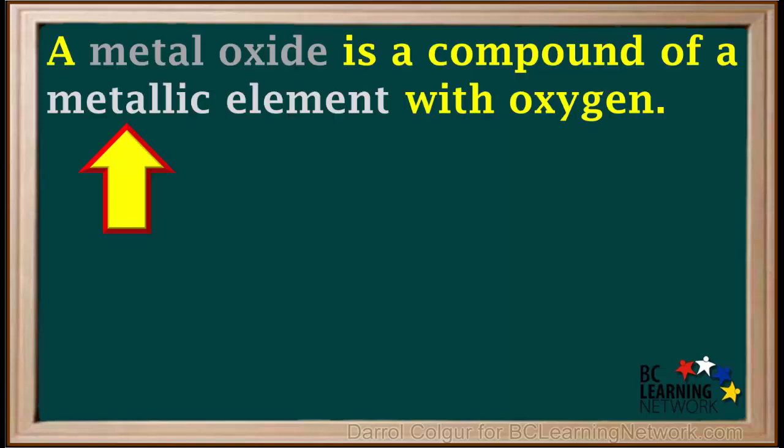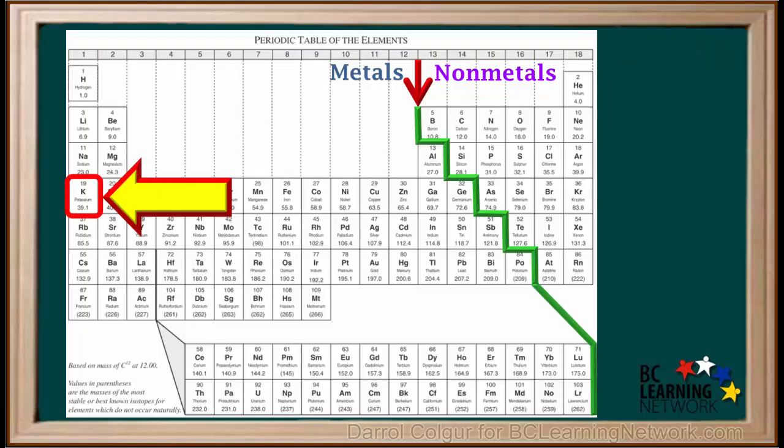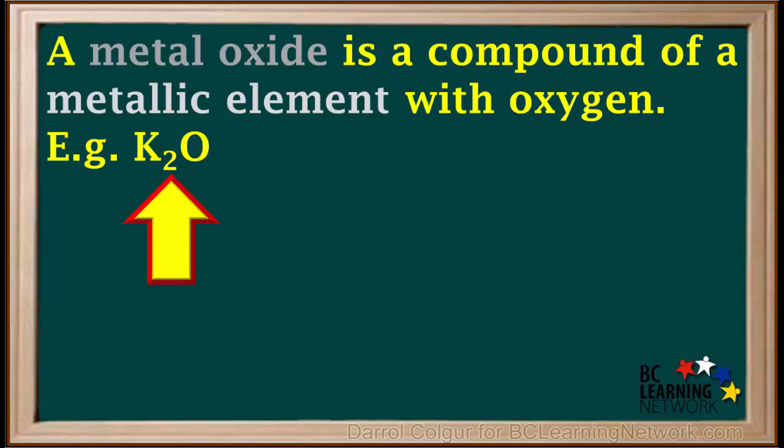A metal oxide is a compound of a metallic element with oxygen. For example, the element potassium is a metal, so the compound K2O, or potassium oxide, is an example of a metal oxide.